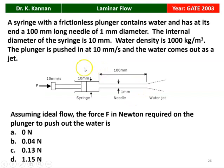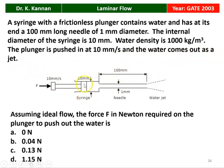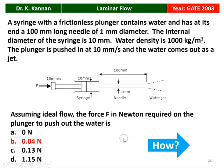Next question from GATE 2003. A syringe with a frictionless plunger contains water and has at its end a 100 mm long needle of 1 mm diameter. The internal diameter of the syringe is 10 mm. Water density is 1000 kg/m³. The plunger is pushed at 10 mm/s velocity and water comes out as a jet. Assuming ideal flow, the force F in Newtons required on the plunger to push out the water is? The correct answer is 0.04 N.